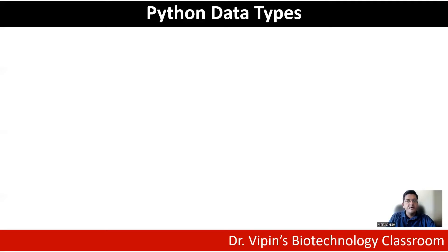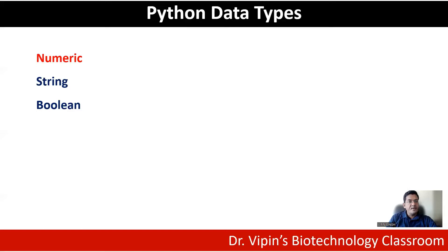There are several data types in Python. These include numeric — and basically as the name indicates, these are numbers, and they themselves can be of three types. Then you have strings. Anything encoded within double quotes will basically be a string — it is a sequence of characters, numbers, or both. Then we have Boolean, which is typically either true or false. These three represent individual data points. For multiple data points, they can be arranged in data structures called list, tuple, dictionary, and set.